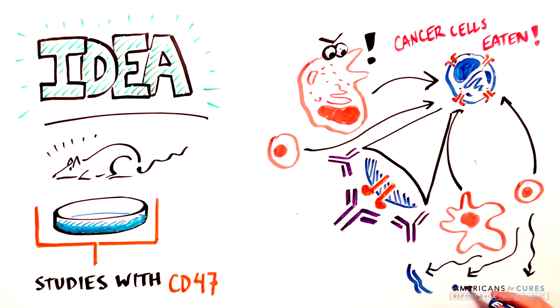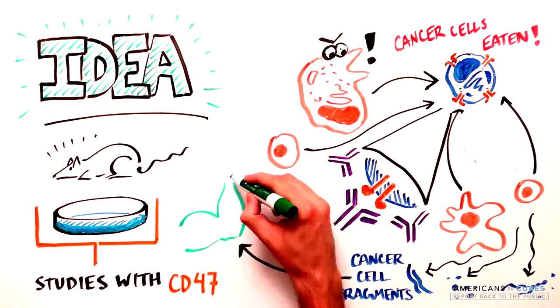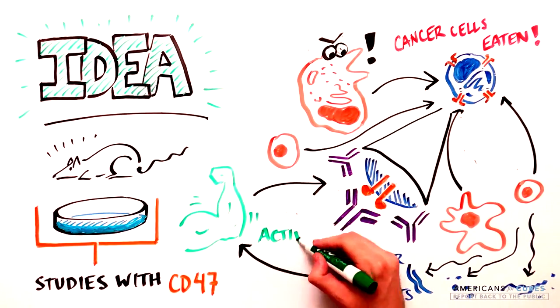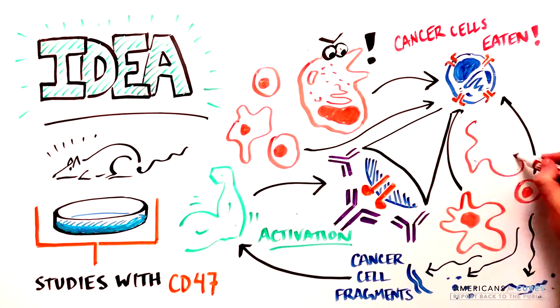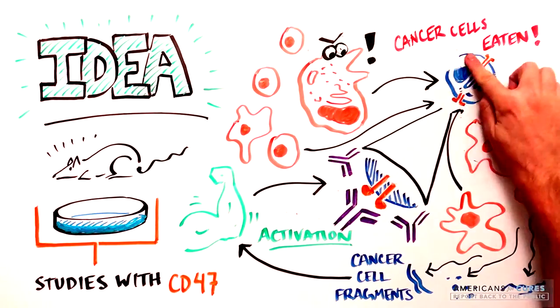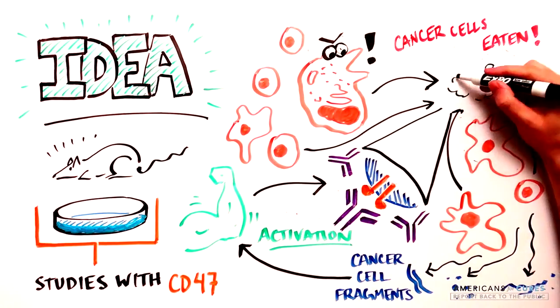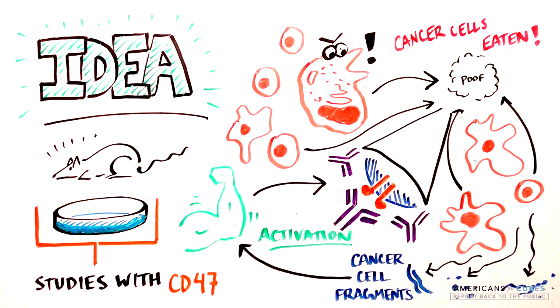When the CD47 cell is eaten by macrophages, they digest the cell into smaller components which activate the immune system even more. This amplified immune response creates a stronger attack against the cancer cells, which could help destroy the remaining ones.